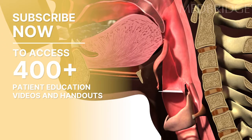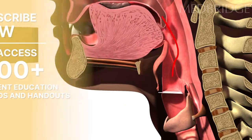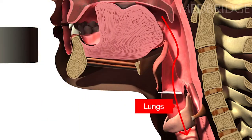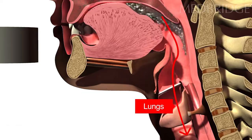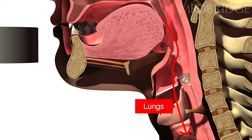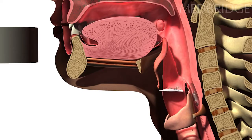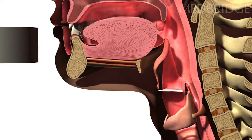Aspiration occurs when food or fluid enters the lower airway in lungs when you swallow. To understand aspiration, let's begin by looking at a normal swallow.